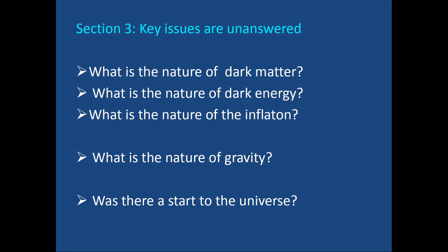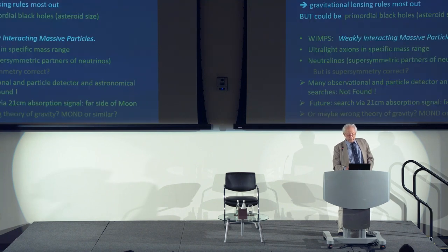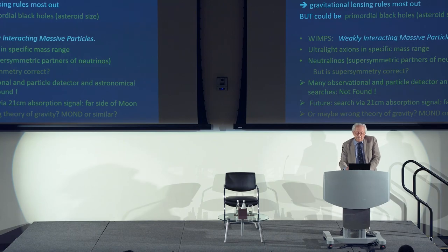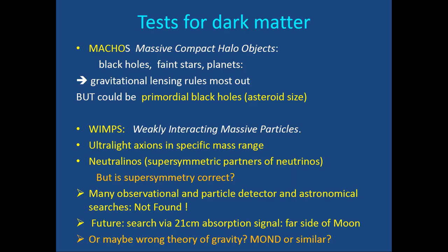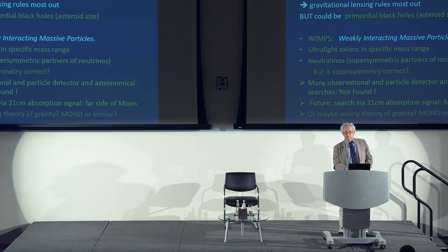Key unanswered questions: What is dark matter? What is dark energy? What is the inflaton — the particle causing inflation? What is the true nature of gravity? And was there a start to the universe? Candidates for dark matter include massive compact halo objects (possibly primordial black holes of asteroid size), weakly interacting massive particles (WIMPs), ultralight axions, neutralinos, supersymmetric particles, and neutrinos. Despite enormous observational, detector, and astronomical searches, we have not found out what dark matter is.